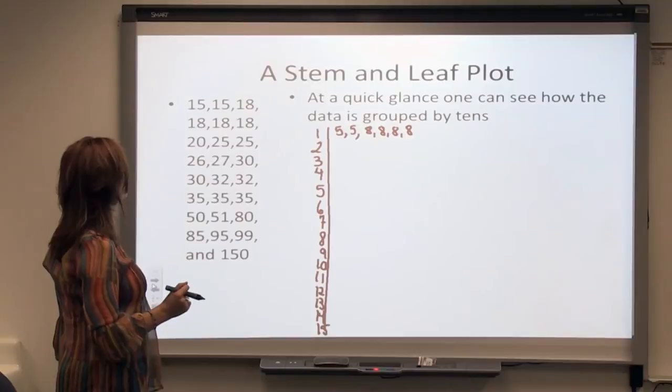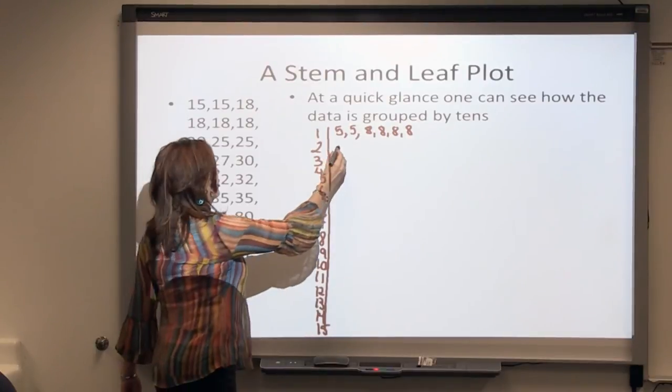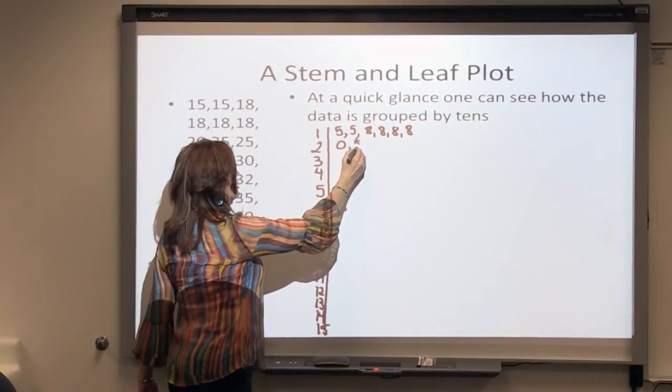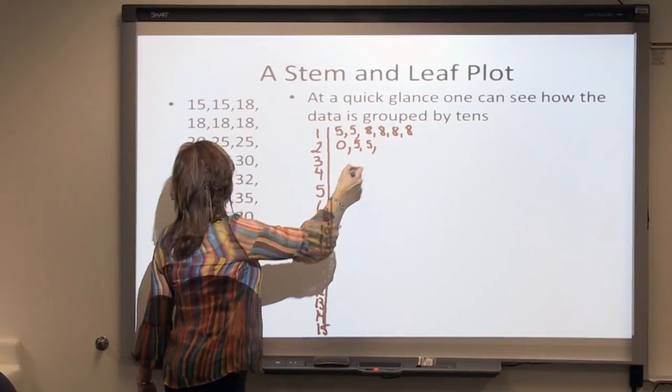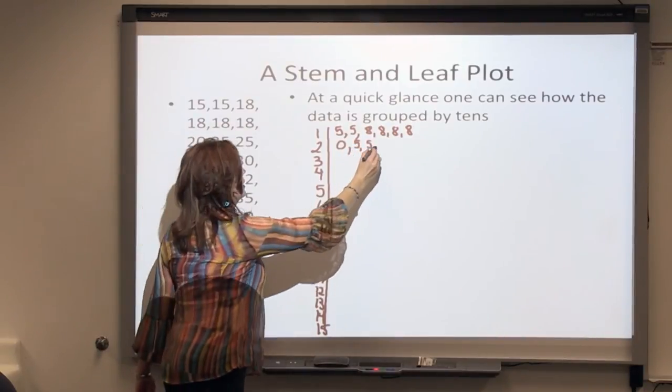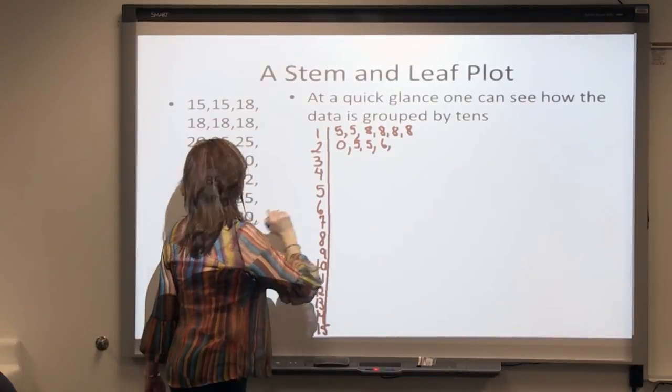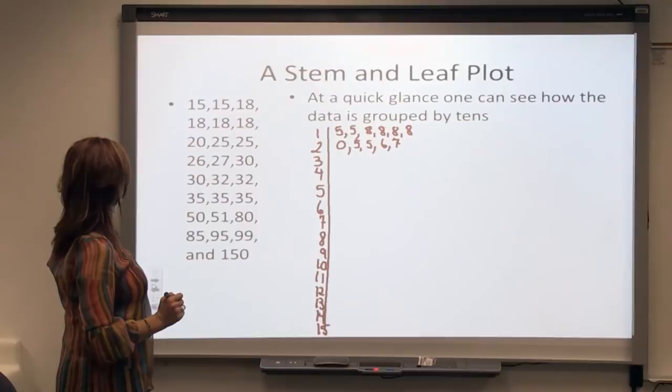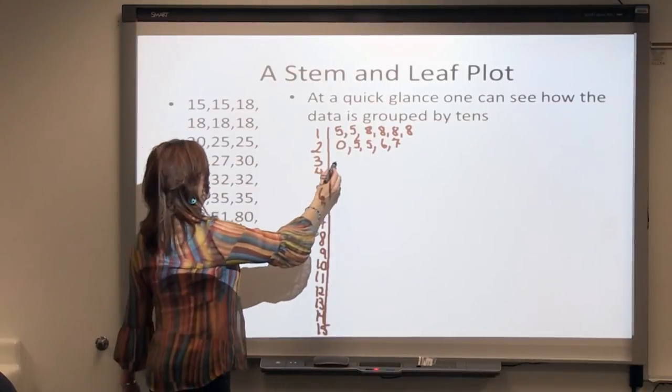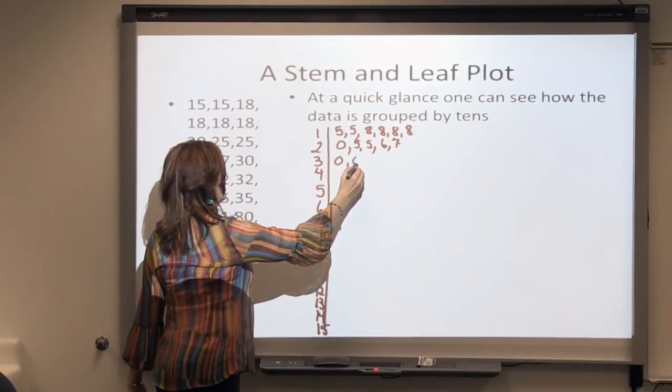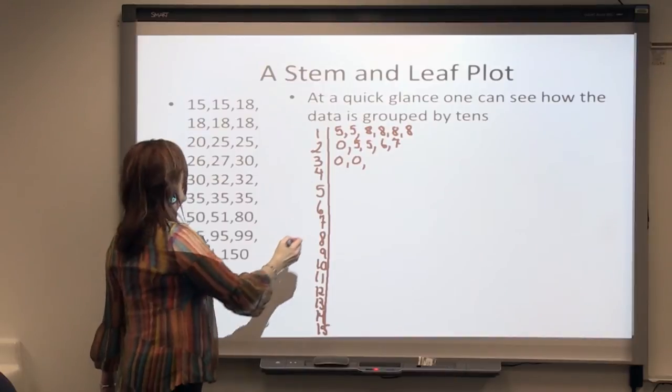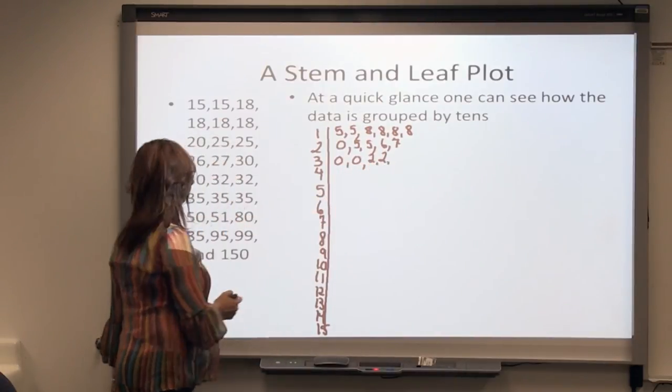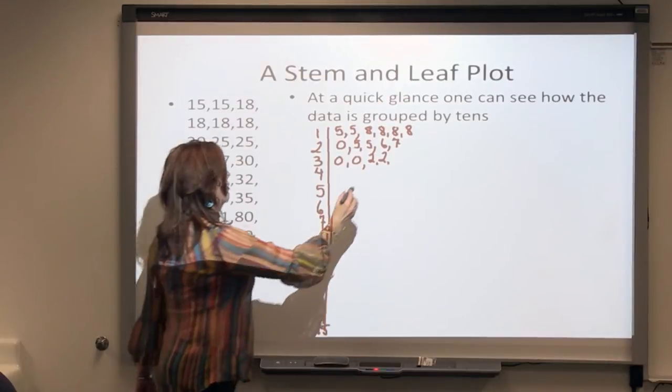How about the twenties? There's someone who makes $20,000, two people make $25,000, one person makes $26,000, and one person makes $27,000. In the thirties, two people at $30,000, two people at $32,000, three people at $35,000.